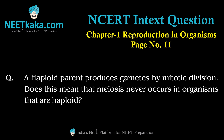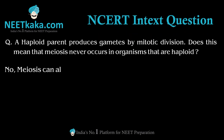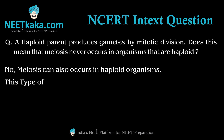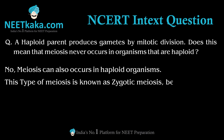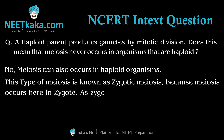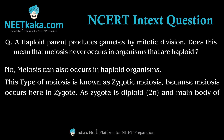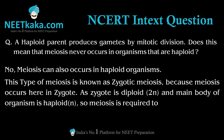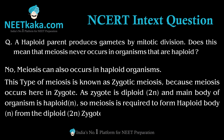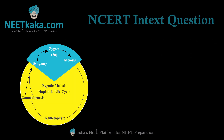The answer is no. Meiosis can also occur in haploid organisms, and this type of meiosis is known as zygotic meiosis, because meiosis occurs here in the zygote. The zygote is in a diploid or 2N stage, while the main body of the organism is haploid, that is N. So meiosis is required to form the haploid body from this diploid zygote.